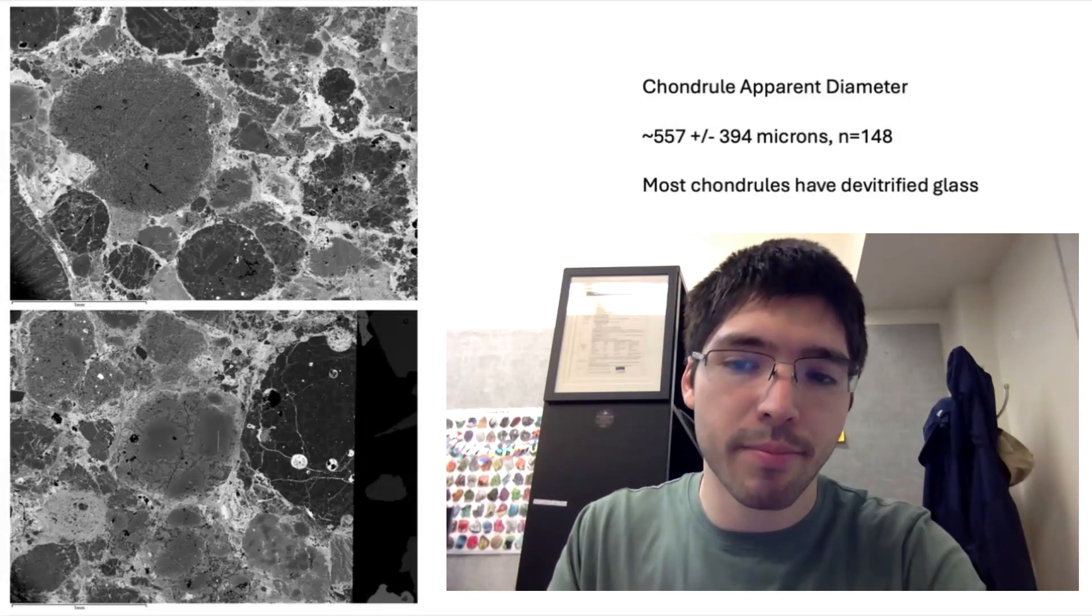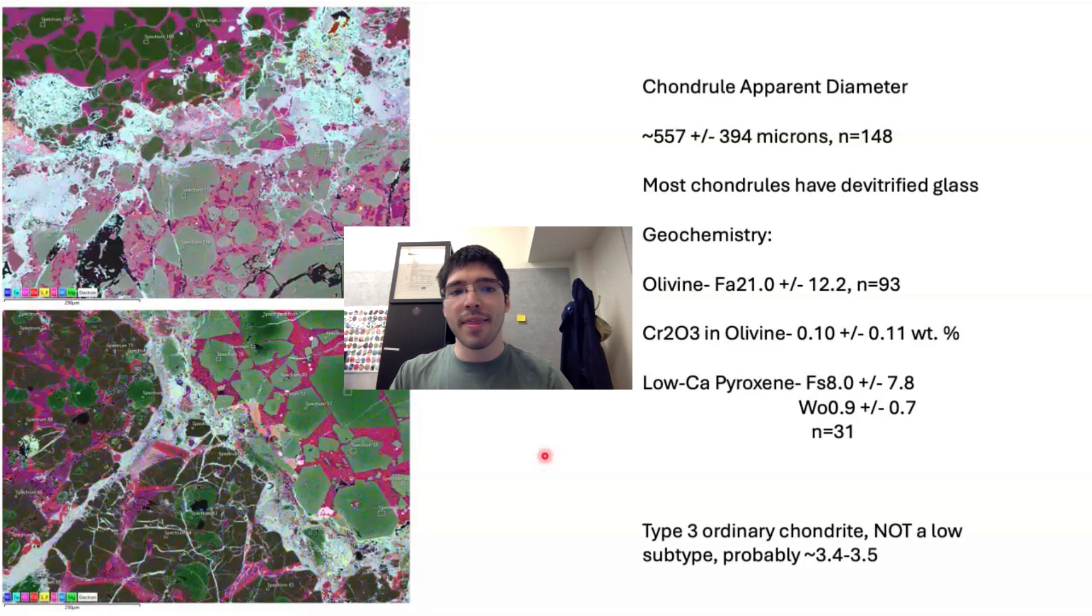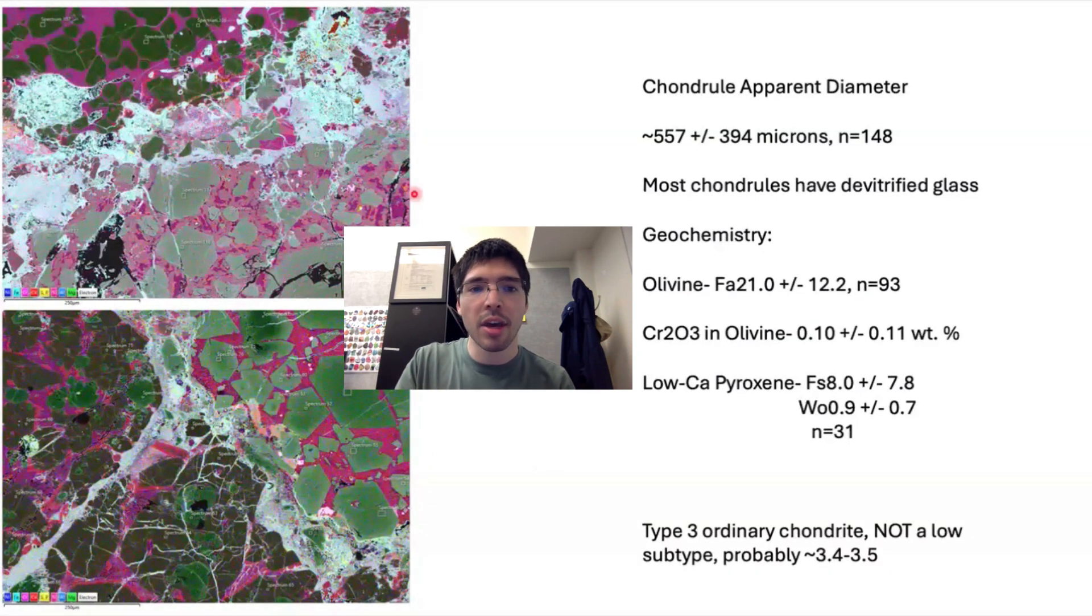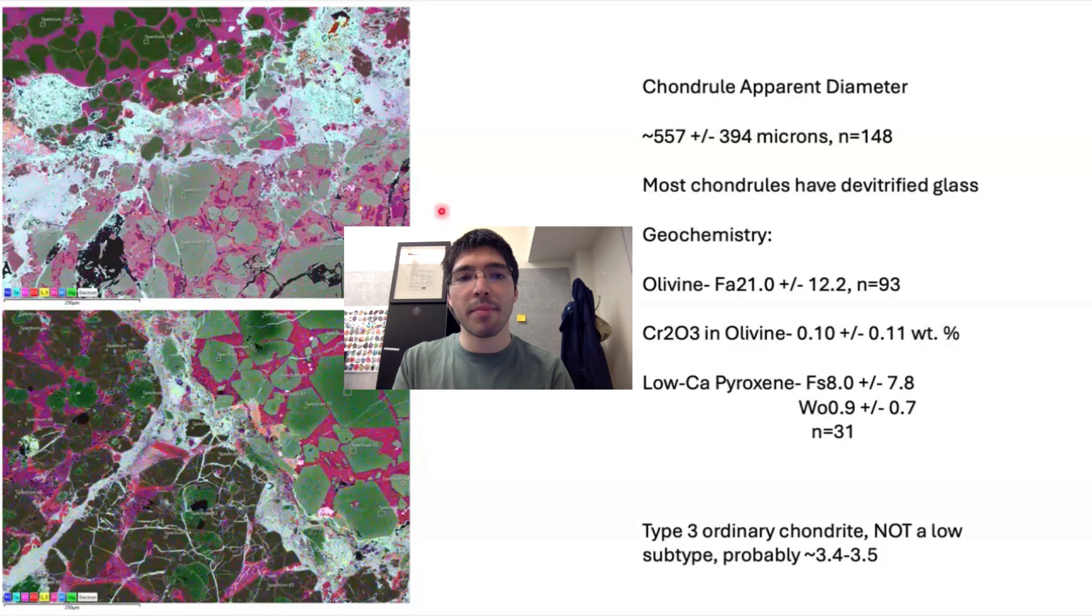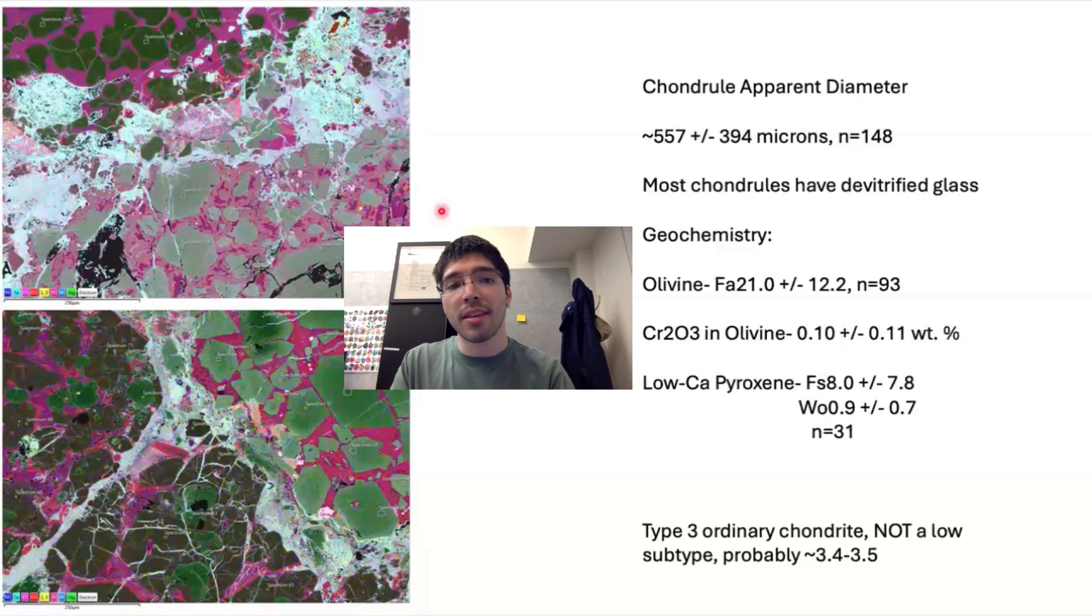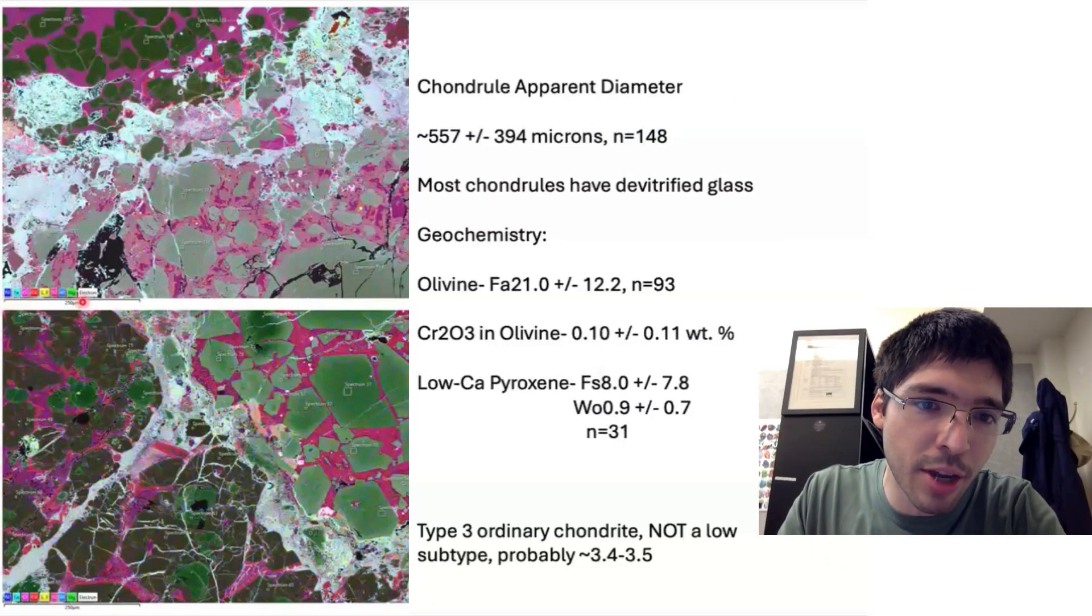Now what I do is after I've taken those initial backscattered images, I zoom in on chondrules of interest and then I take another image. Then I take what's called a chemical map, which looks just like this, where I'm essentially using an x-ray detector to pick up x-rays from different elements that are in my sample. They can give me a great resolution image on where I have certain elements, which I can use then to tell me what minerals are in the sample and where I should take my spots when I do my chemical analysis.